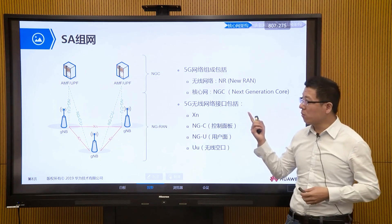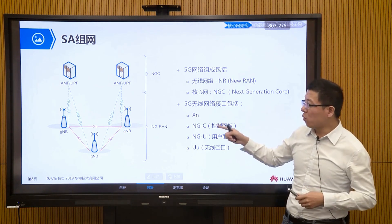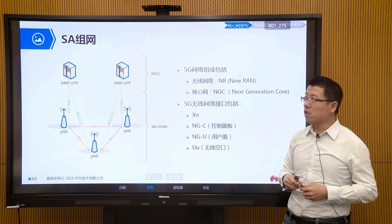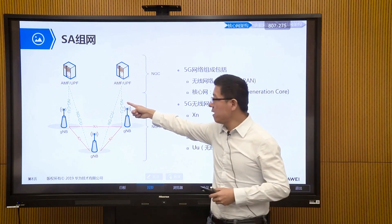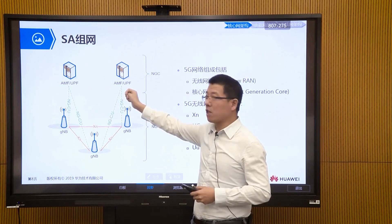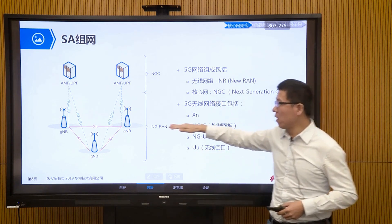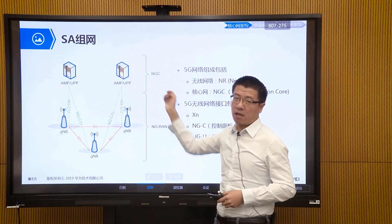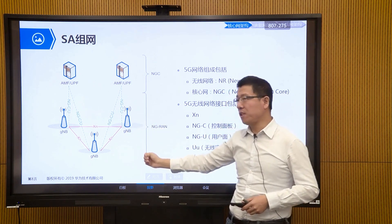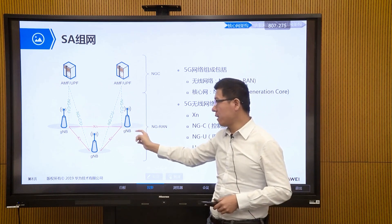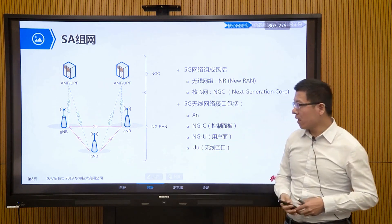Our 5G base station needs to connect to both the control plane and the user plane of the core network through the NG interface. NG-C connects to our control plane AMF, and NG-U connects to our user plane UPF. This achieves interconnection between the wireless base station and the core network. On the wireless side, different 5G base stations also have an interface called the XN interface to achieve inter-base-station interconnection, similar to the 4G era X2 interface.